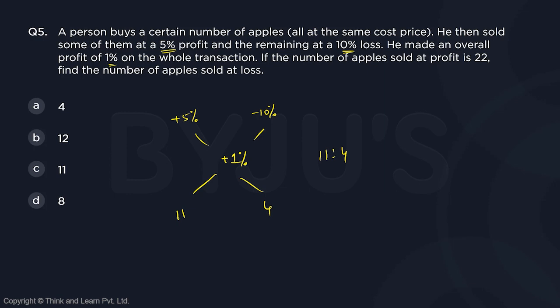If the number of apples sold at a profit is 22, then 11/4 = 22/x, so x equals 8. That's it — very simple. The answer is option D. You should have an idea about when you can use allegation in profit and loss problems.